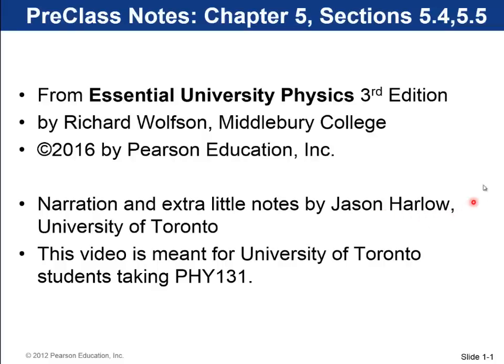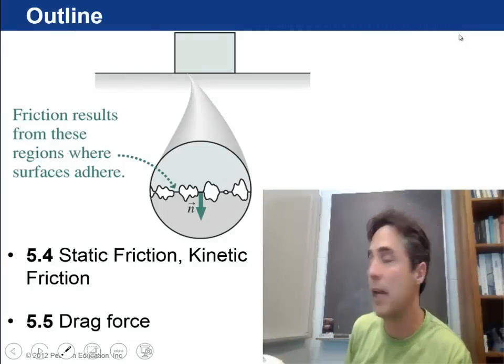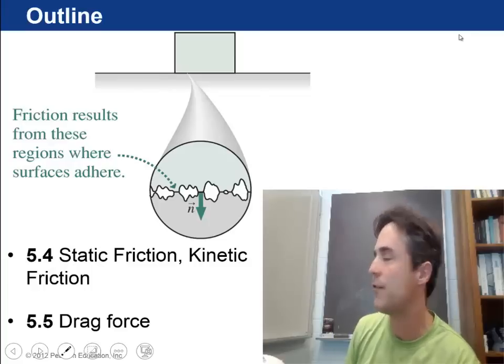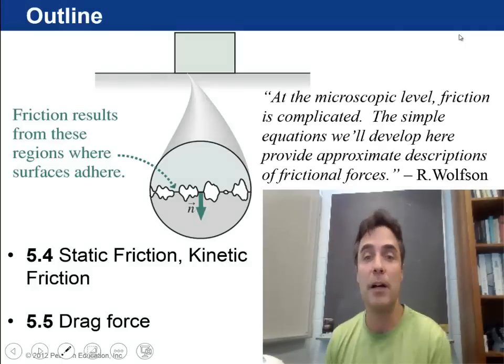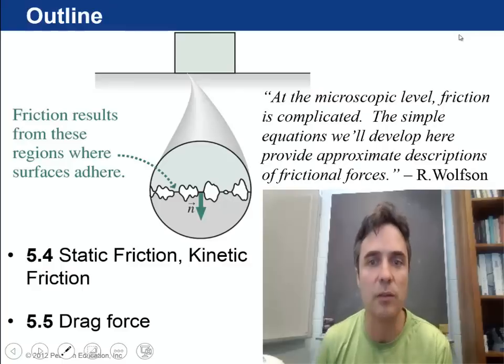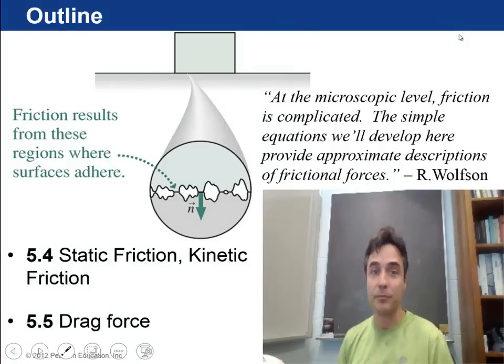Hi there, my name is Jason Harlow. This pre-class video is on chapter 5 of Wolfson, the last two sections. Okay, and so the sections are 5.4 on static friction and kinetic friction, and a little bit on rolling without slipping. And section 5.5 is on drag force. And the quote above is, at the microscopic level, friction is complicated. The simple equations that we will provide here provide approximate descriptions of frictional forces. So let's get started.